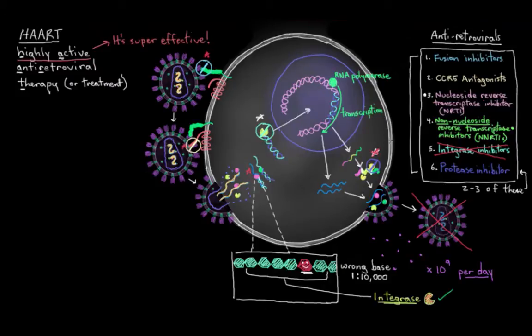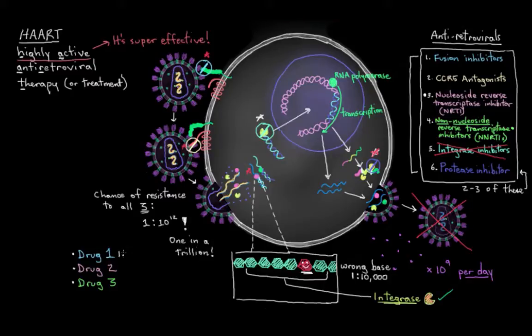So essentially, a virus would have to mutate either randomly or evolve by selective pressure to become resistant to all of the HAART drugs that we're throwing at it in a given cocktail. And in fact, the chance that it could become resistant to all three of the types of drugs would be, at the very least, one in 10 to the 12th power. That's one in a trillion chance. I'm just multiplying one in 10,000 here, by one in 10,000 here, by one in 10,000 here.